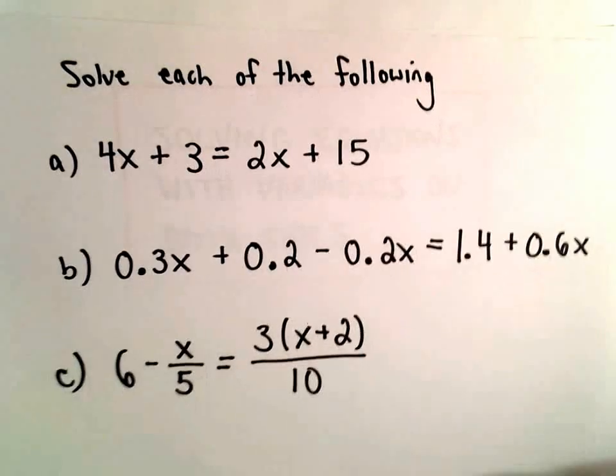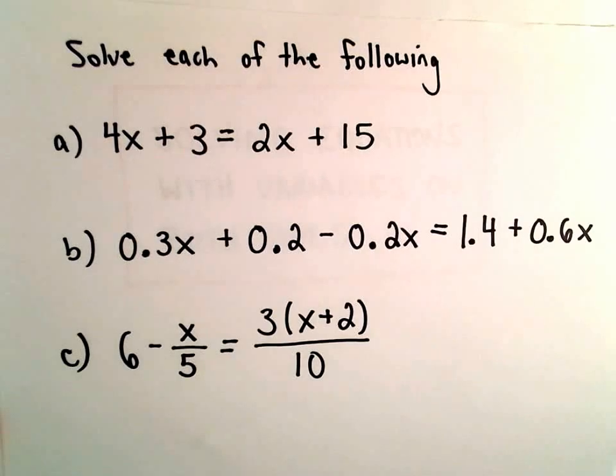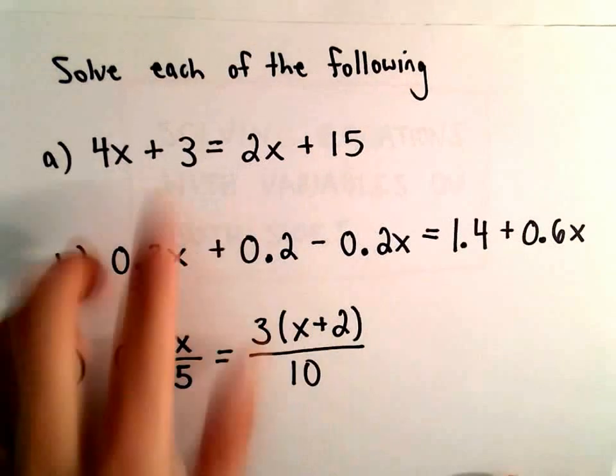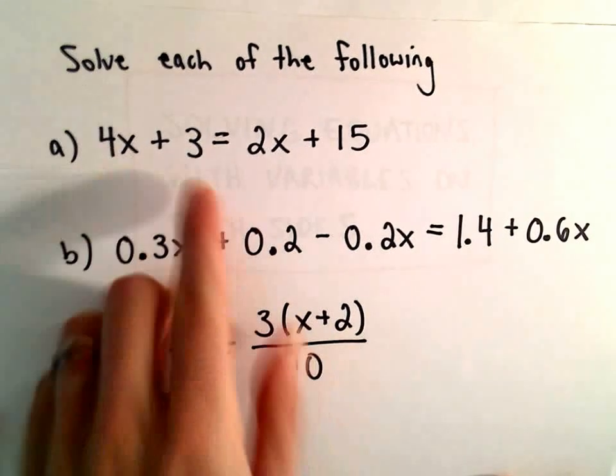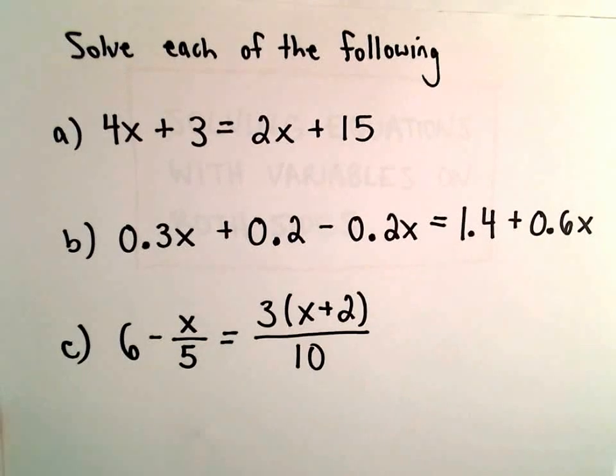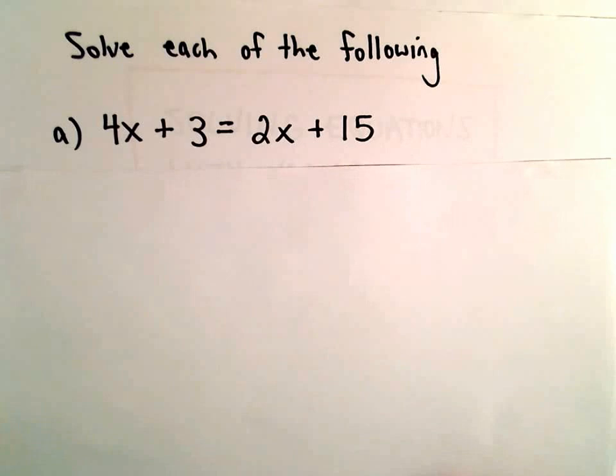Here we're going to look at some examples involving equations where we have variables on both sides of the equation. The idea is still the same. We want to get the terms involving the variables on one side, all the constants on the other side, and then we can combine like terms.